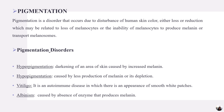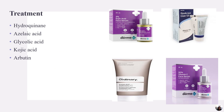Hyperpigmentation is a darkening of an area of skin caused by increased melanin secretion. Hypopigmentation is caused by less production of melanin or its depletion. Vitiligo is an autoimmune disease in which smooth white patches appear in the skin. Albinism is caused by absence of the enzyme that produces melanin. Treatment includes hydroquinone, azelaic acid, glycolic acid, kojic acid, and arbutin. Marketed formulations include 2% kojic acid face serum, 6-12% glycolic acid cream, azelaic acid from The Ordinary, and 20% vitamin C face serum from Dermaco.